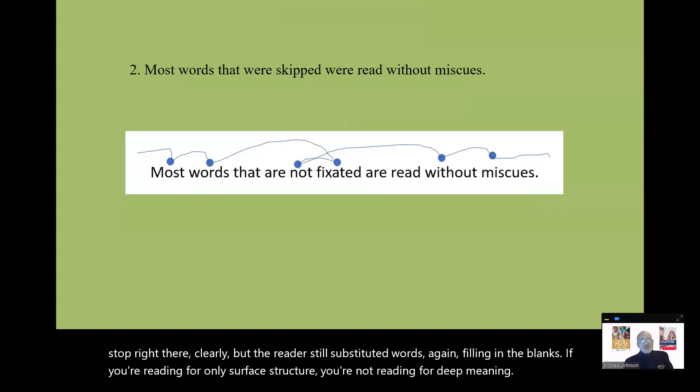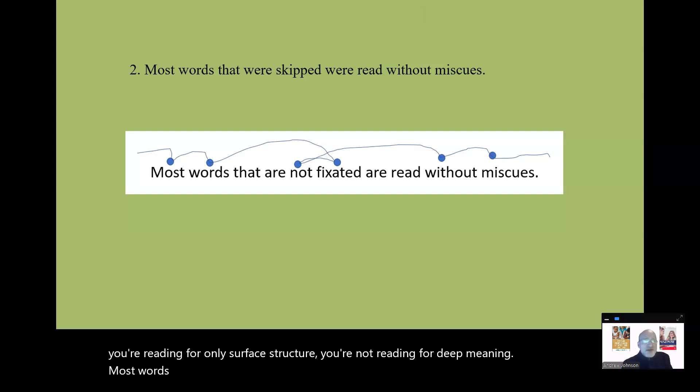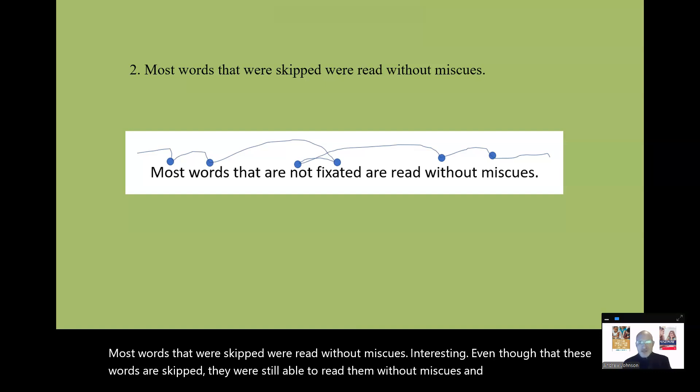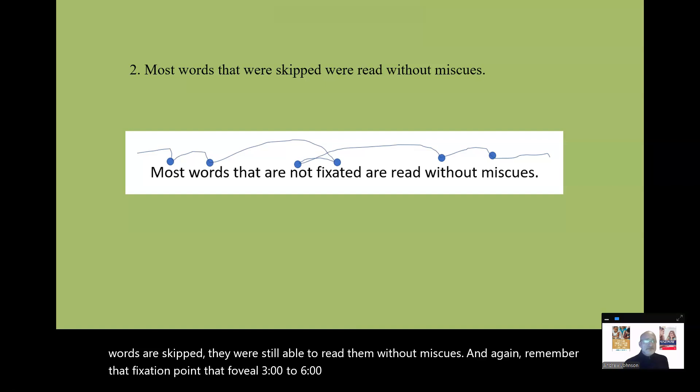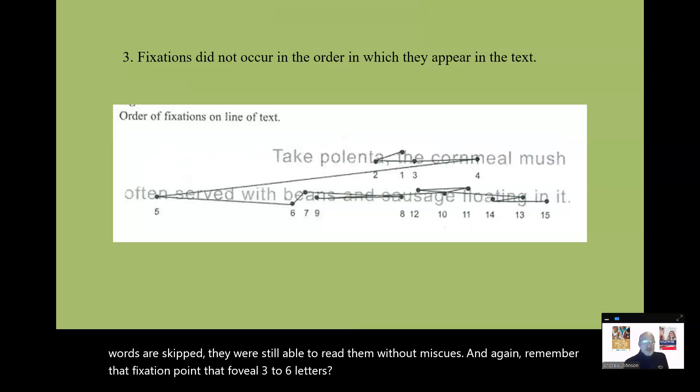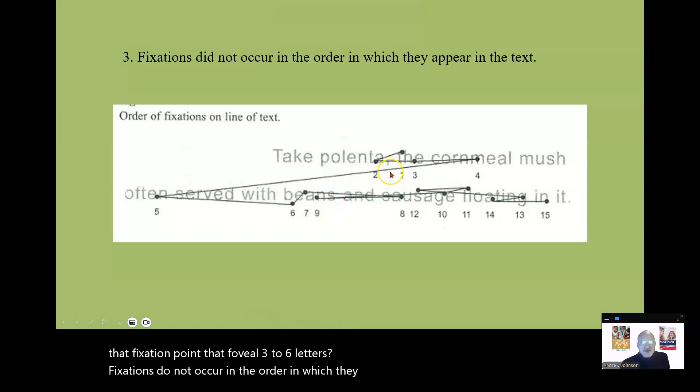If you're reading for only surface structure, you're not reading for deep meaning. Most words that were skipped were read without miscues. Interesting. Even though these words are skipped, they were still able to read them without miscues. And again, remember that fixation point, that foveal, three to six letters.